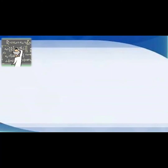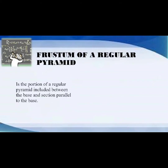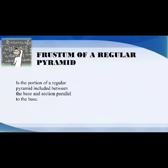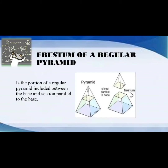Now let's go to our main topic, which is the frustum of a regular pyramid. The frustum of a regular pyramid is the portion of a regular pyramid included between the base and a section parallel to the base.